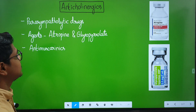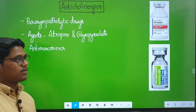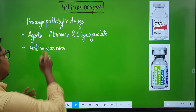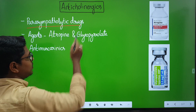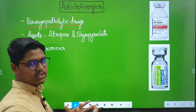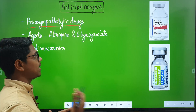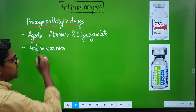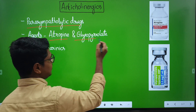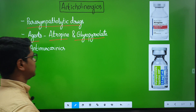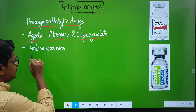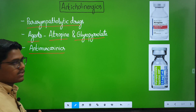Coming to our main class — the anticholinergics. From the introduction, these are known as parasympatholytic drugs because they cause lysis of the parasympathetic system. If they follow the system, then it is mimetic. The agents commonly used in veterinary anesthesiology are atropine and glycopyrrolate.